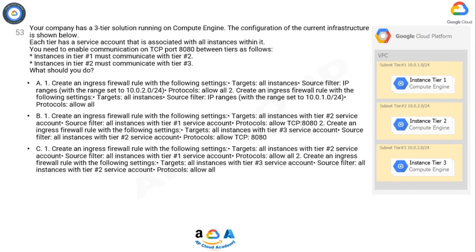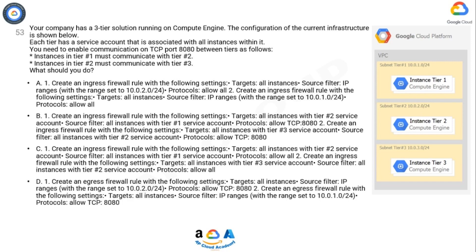Option C: 1. Create an ingress firewall rule — Targets: all instances with tier two service account; Source filter: all instances with tier one service account; Protocols: allow all. 2. Create an ingress firewall rule — Targets: all instances with tier three service account; Source filter: all instances with tier two service account; Protocols: allow all. Option D: 1. Create an egress firewall rule — Targets: all instances; Source filter: IP ranges set to 10.0.2.0/24; Protocols: allow TCP 8080. 2. Create an egress firewall rule — Targets: all instances; Source filter: IP ranges set to 10.0.1.0/24; Protocols: allow TCP 8080.